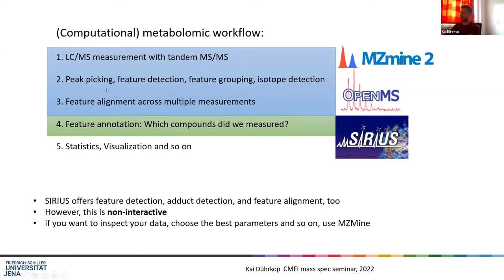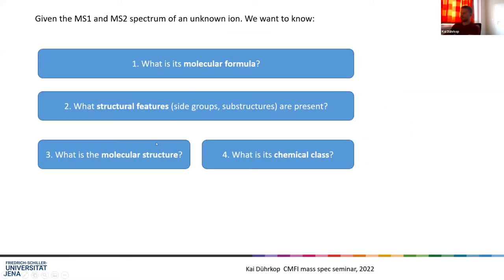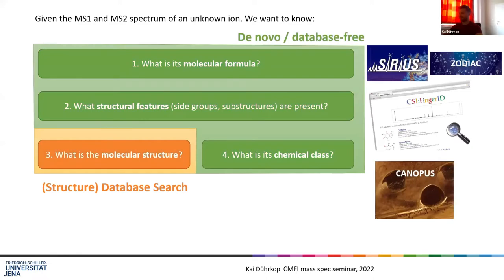I don't want to talk about pre-processing today, but really about feature annotation — in particular about these four questions. If we have the MS1 and the associated MS2 spectra of an unknown ion: what is its molecular formula? What are the structural features, like which side groups or structure patterns are contained in this molecule? What is the molecular structure, and to which chemical class does it belong? Questions one, two, and four are database-free, which is important as soon as we leave model organisms and want to discover new things, since you cannot expect all measured compounds to be in databases.